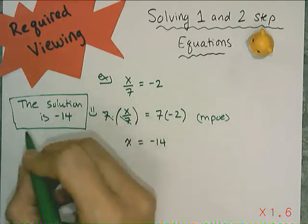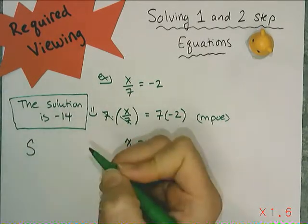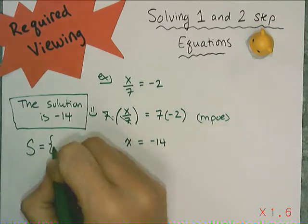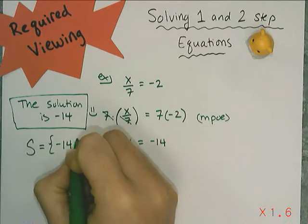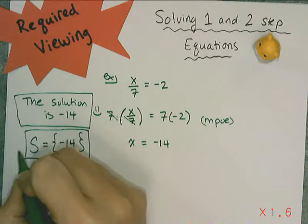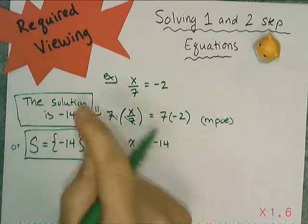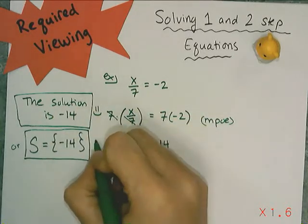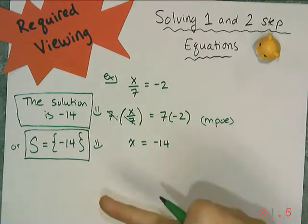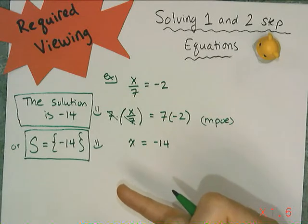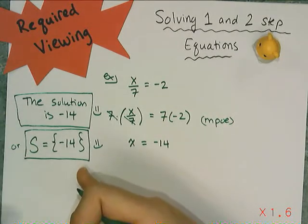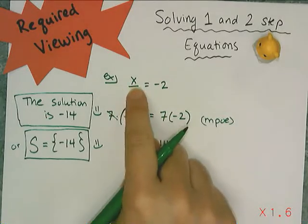The alternate way is to use solution set notation, which turns this sentence into a mathematical expression. The words 'the solution' turn into a capital S, 'is' becomes an equals, then you open up curly braces and put whatever answer you get inside — in this case, negative fourteen. You can use either format. We use solution set notation because sometimes equations have more than one answer, and the only way to appropriately write them is in solution set notation or sentence format.